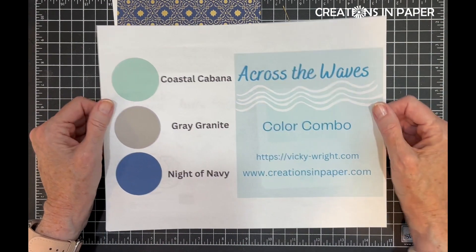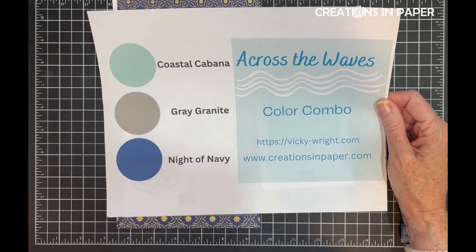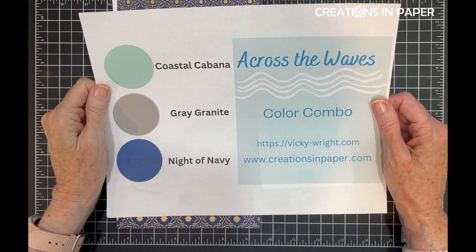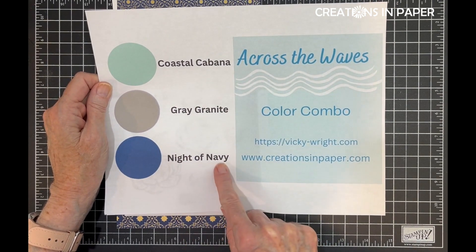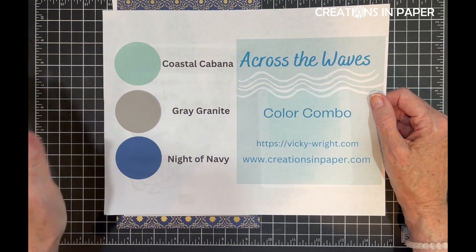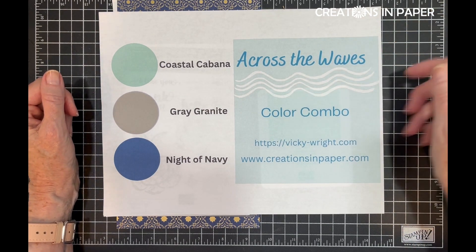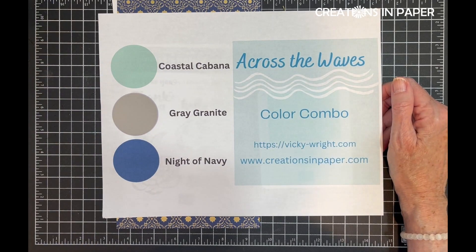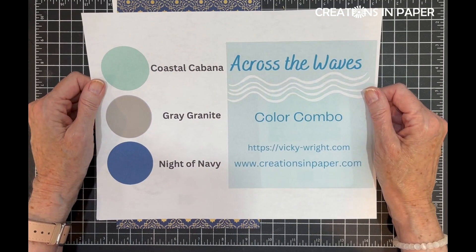Hello everyone! Are you ready for day two of our Across the Waves color challenge? Today's project still uses the Coastal Cabana, Gray Granite, and Night of Navy. I will show all of the details and a good picture on my blog at the same time. There is a link in the information section below. If you want to see what I'm going to do with these colors today, join me in the studio and I'll show you how.